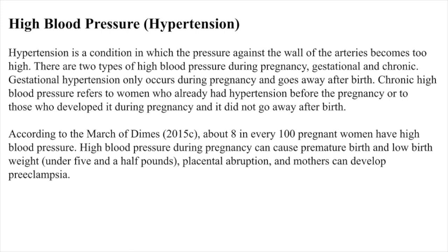High blood pressure (Hypertension) is a condition in which the pressure against the wall of the arteries becomes too high. There are two types during pregnancy: gestational and chronic. Gestational hypertension only occurs during pregnancy and goes away after birth. Chronic high blood pressure refers to women who already had hypertension before the pregnancy or those who developed it during the pregnancy and it did not go away after birth. According to the March of Dimes, about 8 in every 100 pregnant women have high blood pressure. High blood pressure during pregnancy can cause premature birth and low birth weight (under 5.5 pounds), placental abruption, and mothers can develop preeclampsia.